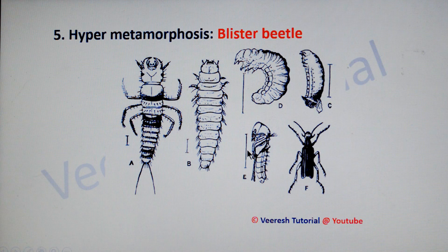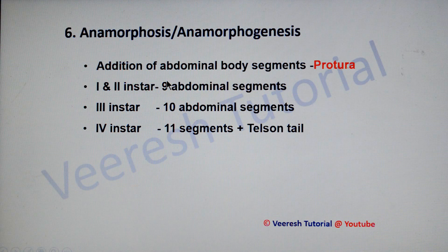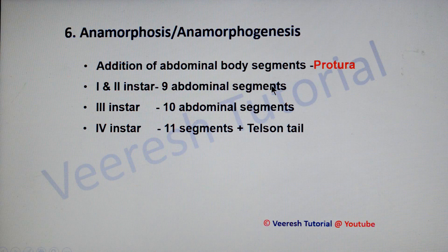Next is anamorphosis, also called as anamorphogenesis, which is the addition of abdominal body segments. You can see it in Protura. In this case, first and second instars have nine abdominal segments, and one more abdominal segment is added in the third instar. In the fourth instar, again one more abdominal segment is added, giving a total of 11 abdominal segments plus the telson.